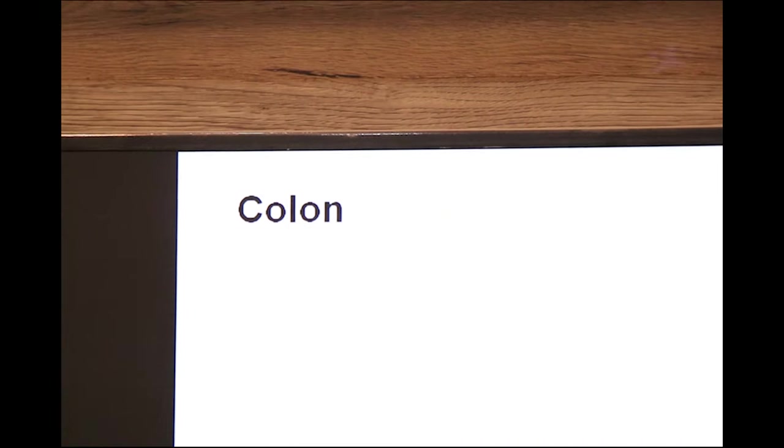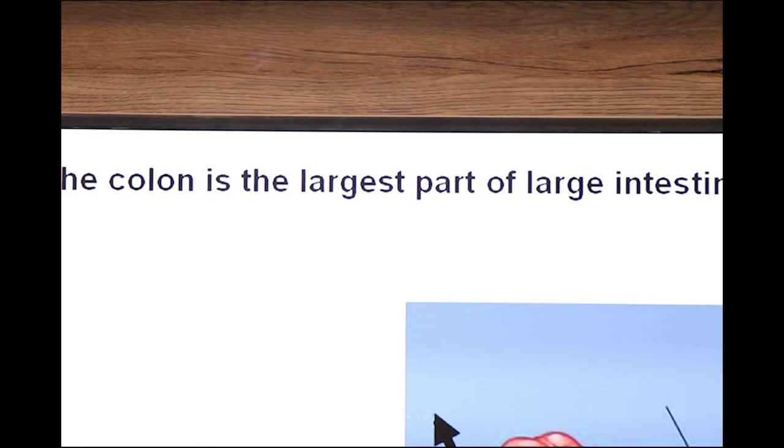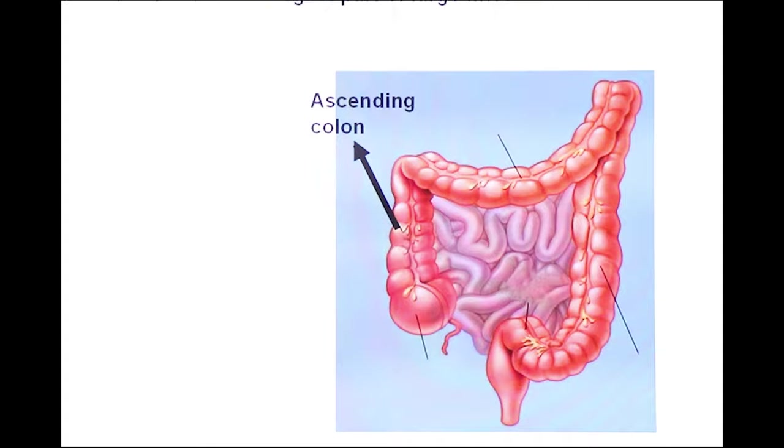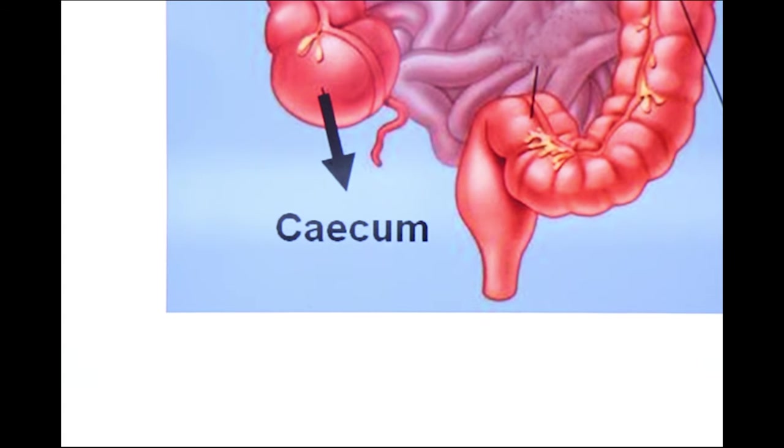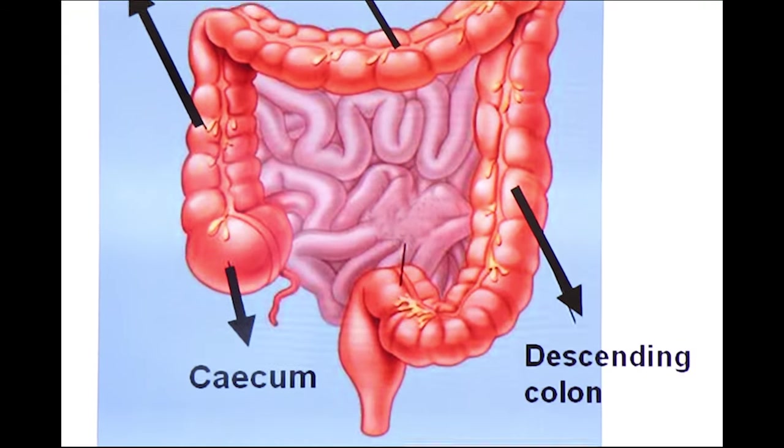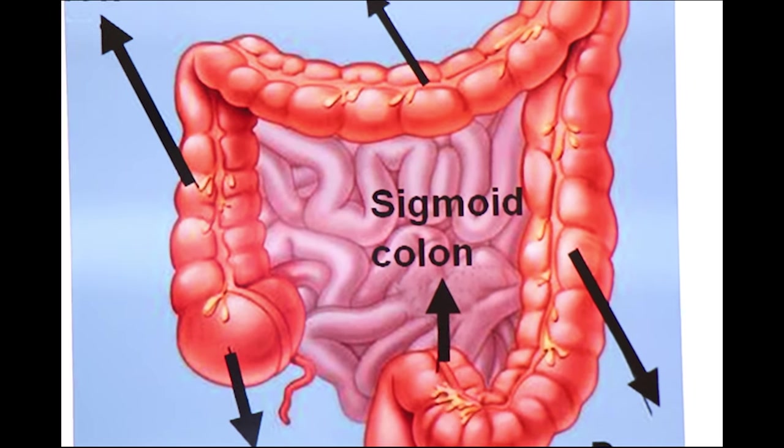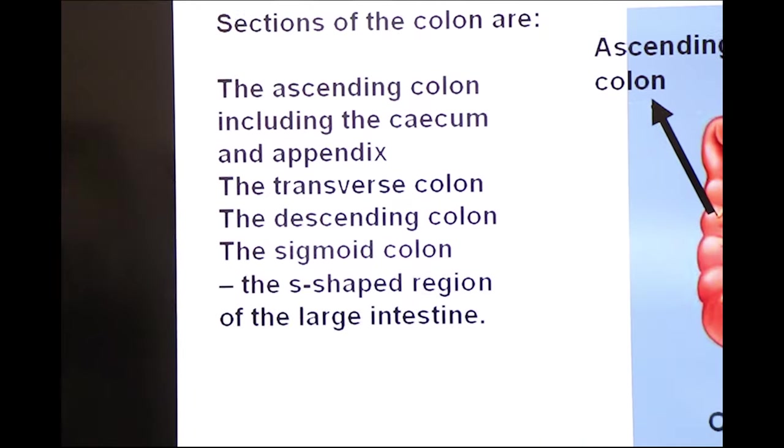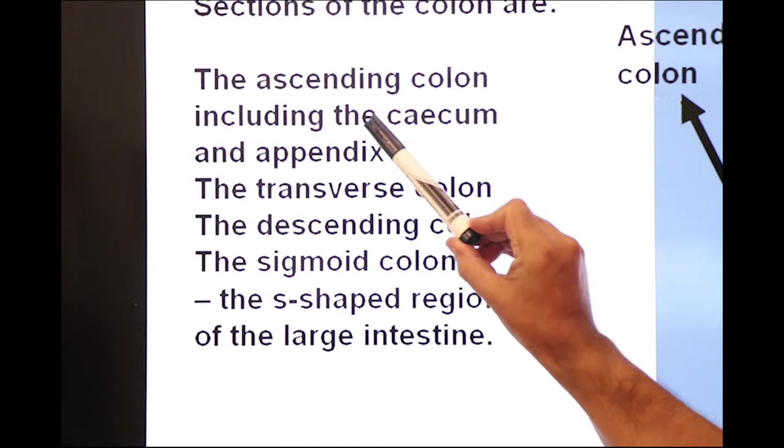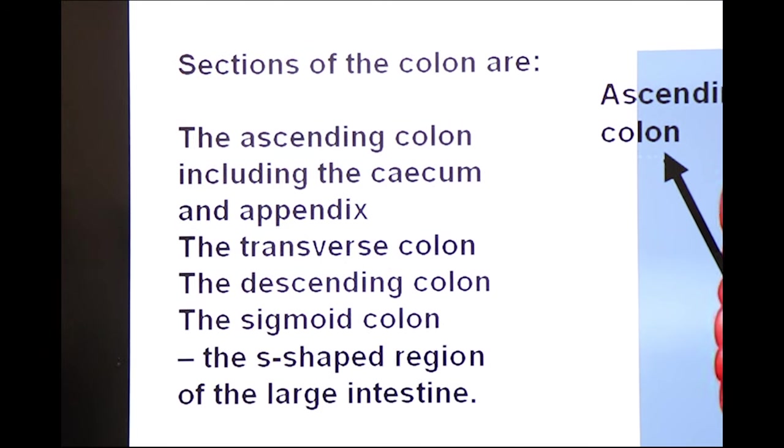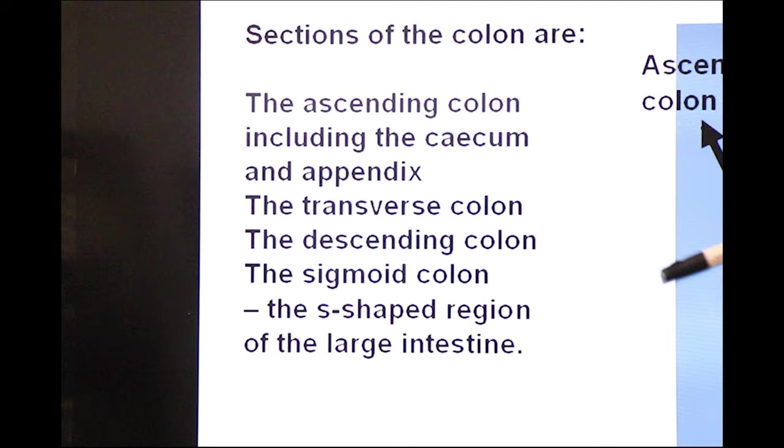Now next section, colon. Colon. The colon is the largest part of the large intestine. And here you see ascending colon and here you see the cecum, transverse colon, descending colon and s-shaped curvy part sigmoid colon. Now what are the sections of colon? The ascending colon including the cecum and appendix.